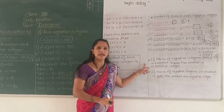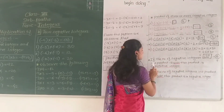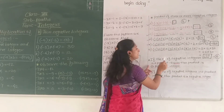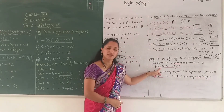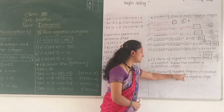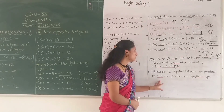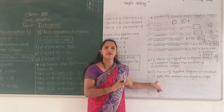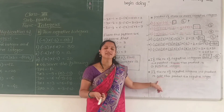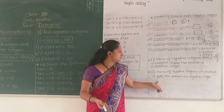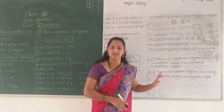So remember students, this is very important. If the number of negative integers in a product is even, then the product is a positive integer. And if the number of negative integers in a product is odd, then the product is a negative integer. You have to keep these two statements in mind — they are very important for doing the multiplication of negative integers.